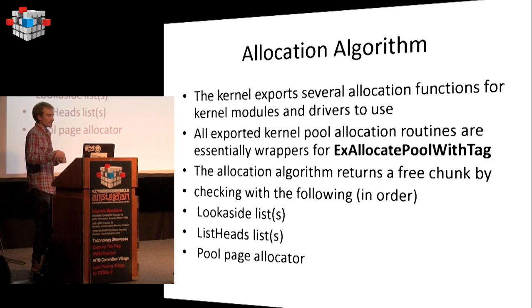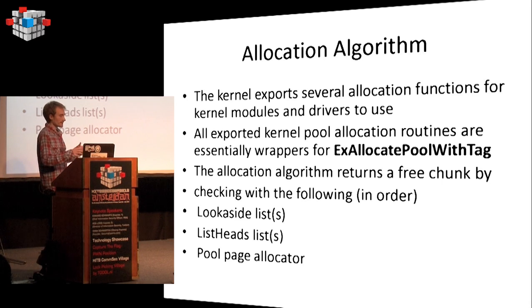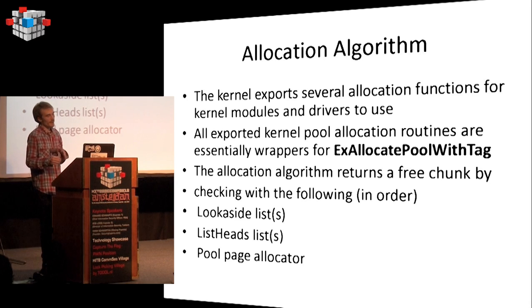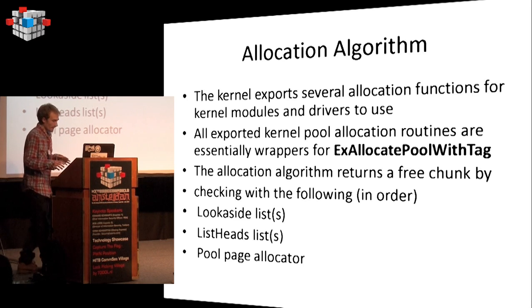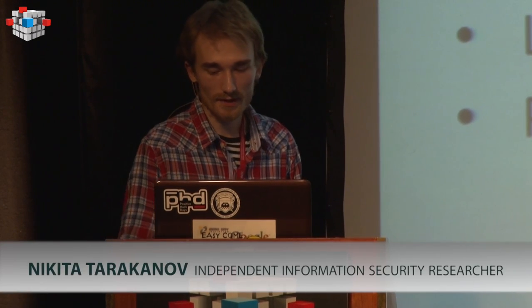The basic allocation algorithm returns a free chunk by first looking in look-aside lists, then list heads, then the full-page allocator. In some heap manipulation techniques there is a technique to fill look-aside lists, so that the allocation algorithm returns a free chunk from list heads. This is just the order of allocation.